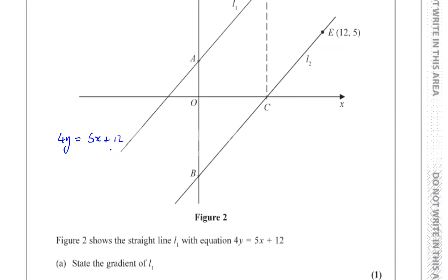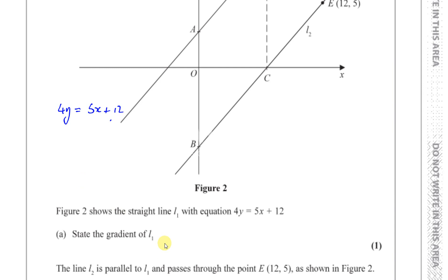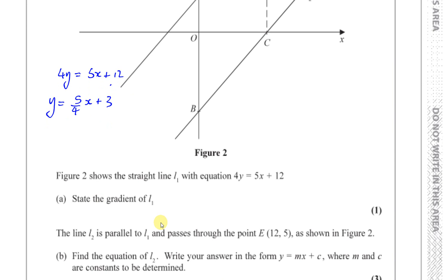It says state the gradient of line 1. To state the gradient of line 1, we have to rearrange it so it says y equals. So y equals, and I'm going to write them as separate terms: y equals 5 over 4x plus 12 over 4, which is 3. So the gradient of line 1 is equal to 5 over 4. Y equals mx plus c — you rearrange the equation so y is the subject, then read off the gradient as the coefficient of x.